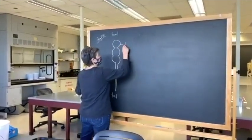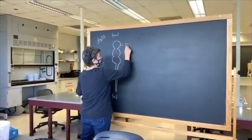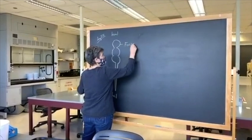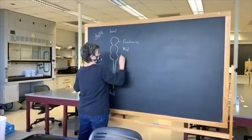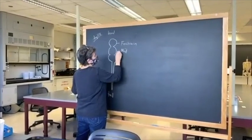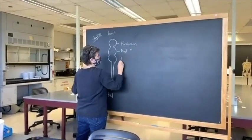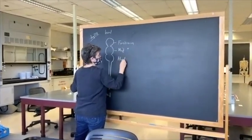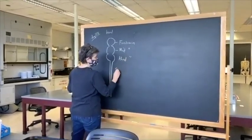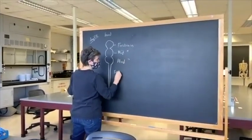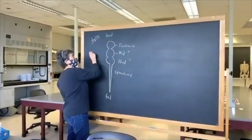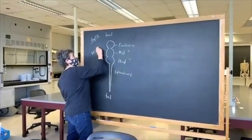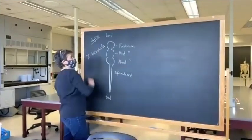At day 28 we have the forebrain, the midbrain, the hindbrain, and the spinal cord. Each one of these swellings is called a vesicle. This is the three-vesicle stage.